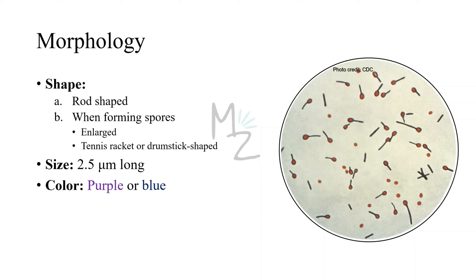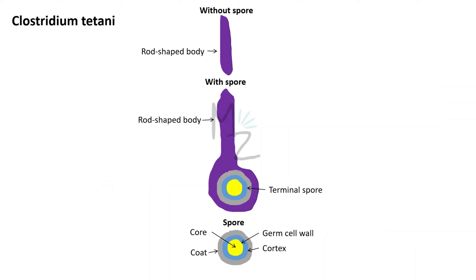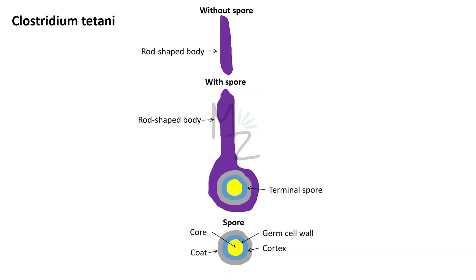Clostridium tetani is normally rod shaped, but when conditions become unsuitable it converts into spores, which are circular or spherical. The intermediate stage between rod and spore is the tennis racket or drumstick shape — a bacterium with a terminal spore at one end. Clostridium tetani is 2.5 micrometers long and blue or purple in color because, as a gram positive bacterium, it retains the dye in its thick peptidoglycan layer.